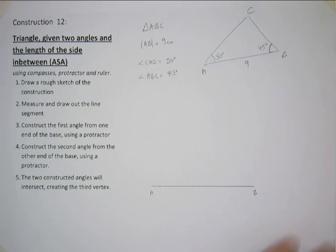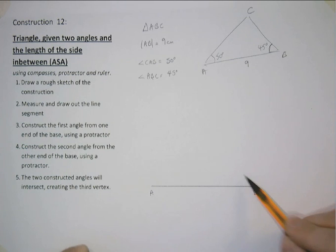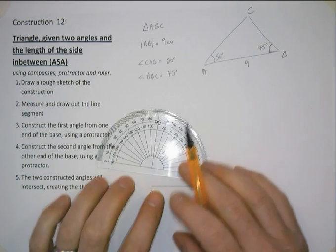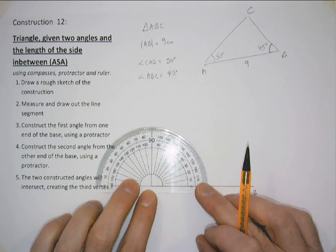And what we now need to do is create two angles. One angle at this end of the line segment and another angle at the other end of this line segment. So the first one is 50 degrees. So we line up our protractor, centre on the end of the line segment,